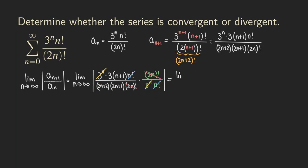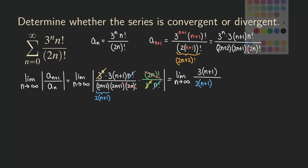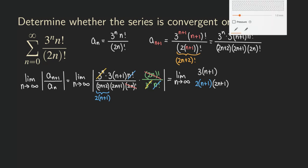At this point all factors are positive so we no longer need the absolute value. We are left with the limit as n approaches infinity of 3 times (n+1) in the numerator. In the denominator, we factor 2 from (2n+2) to get 2(n+1), so the denominator is 2(n+1) times (2n+1).